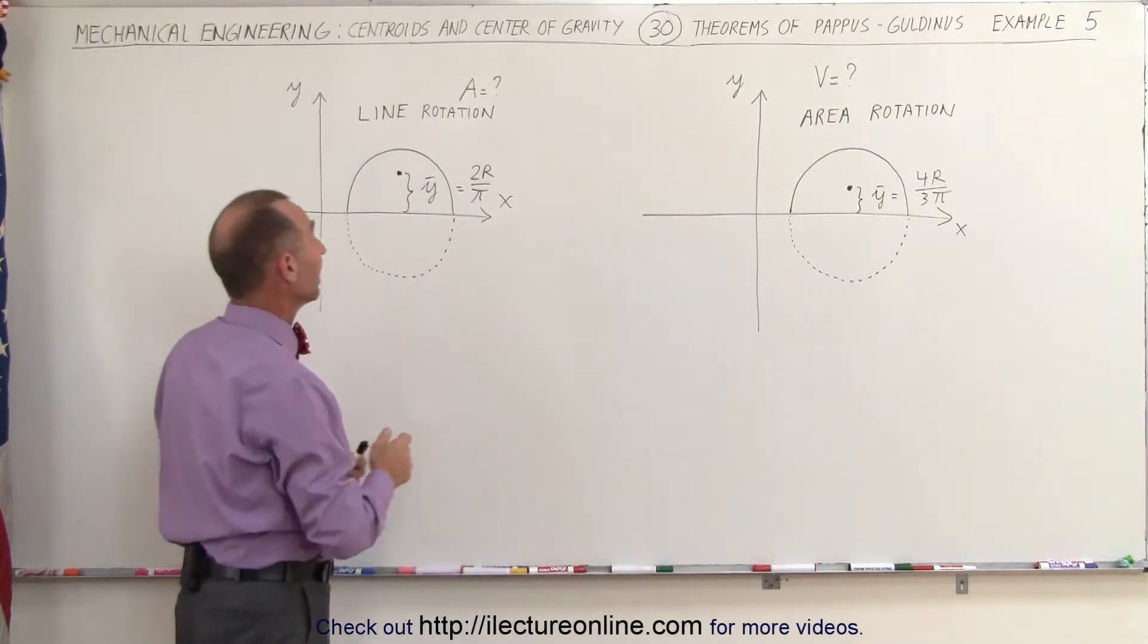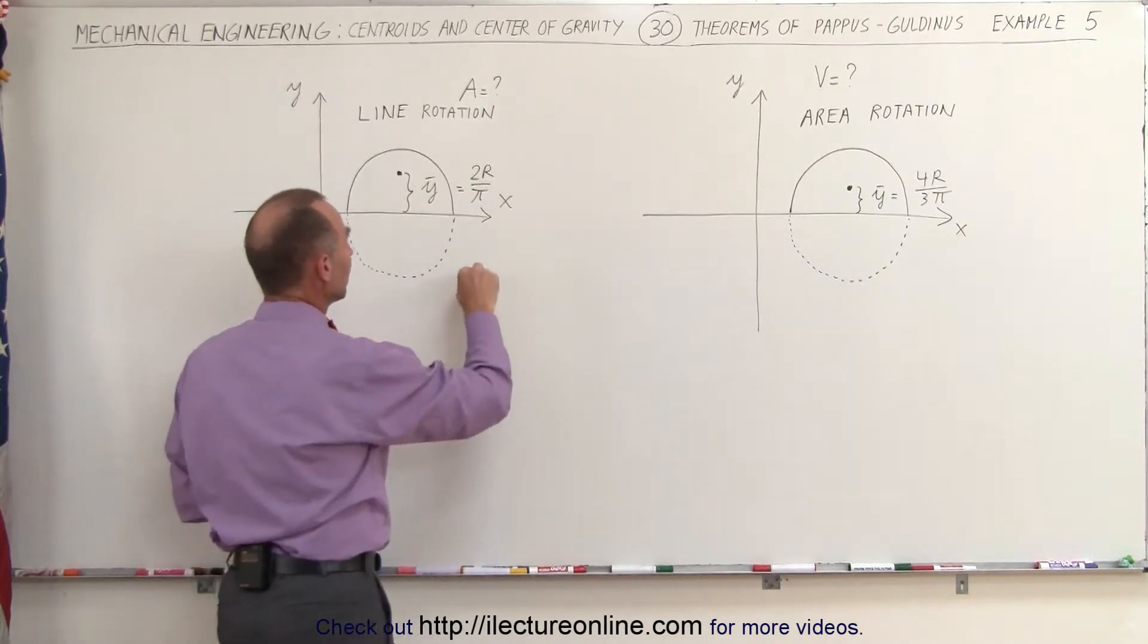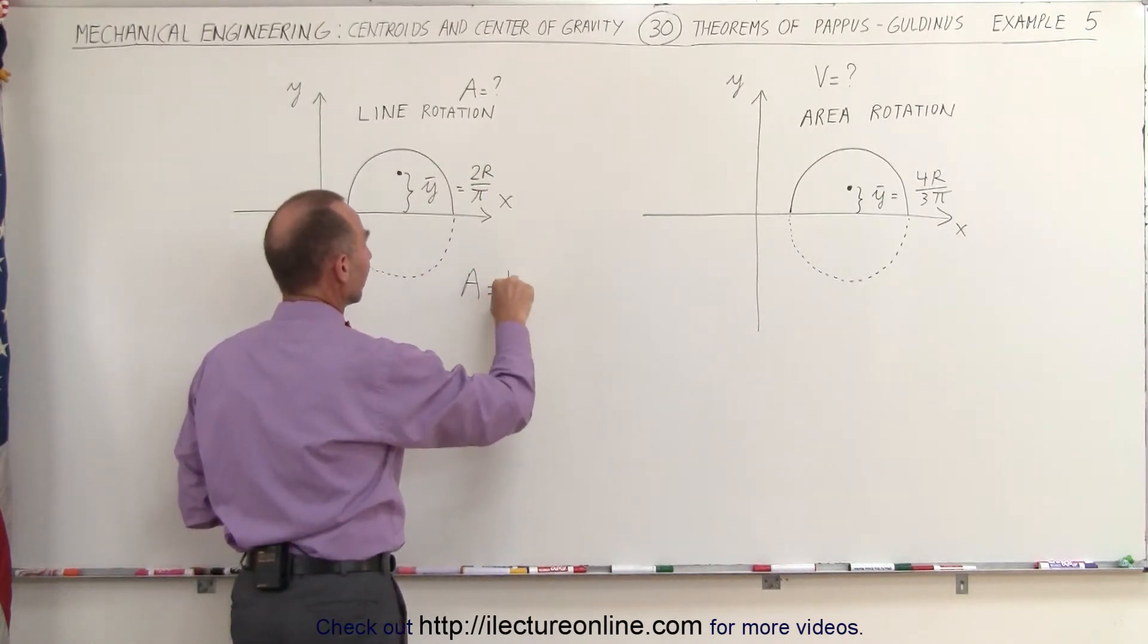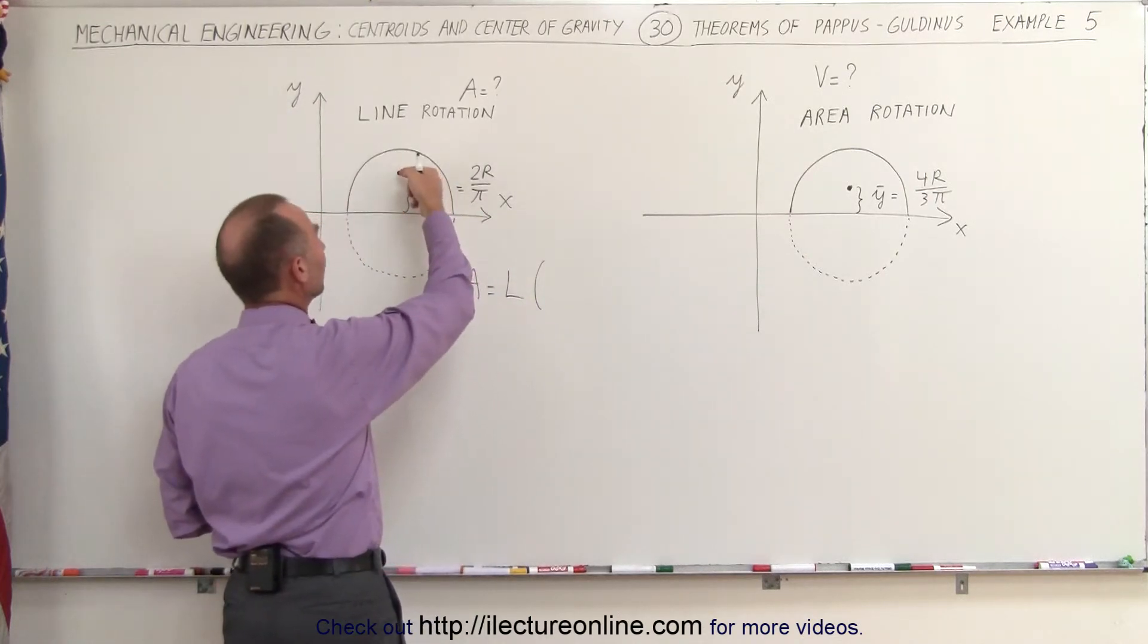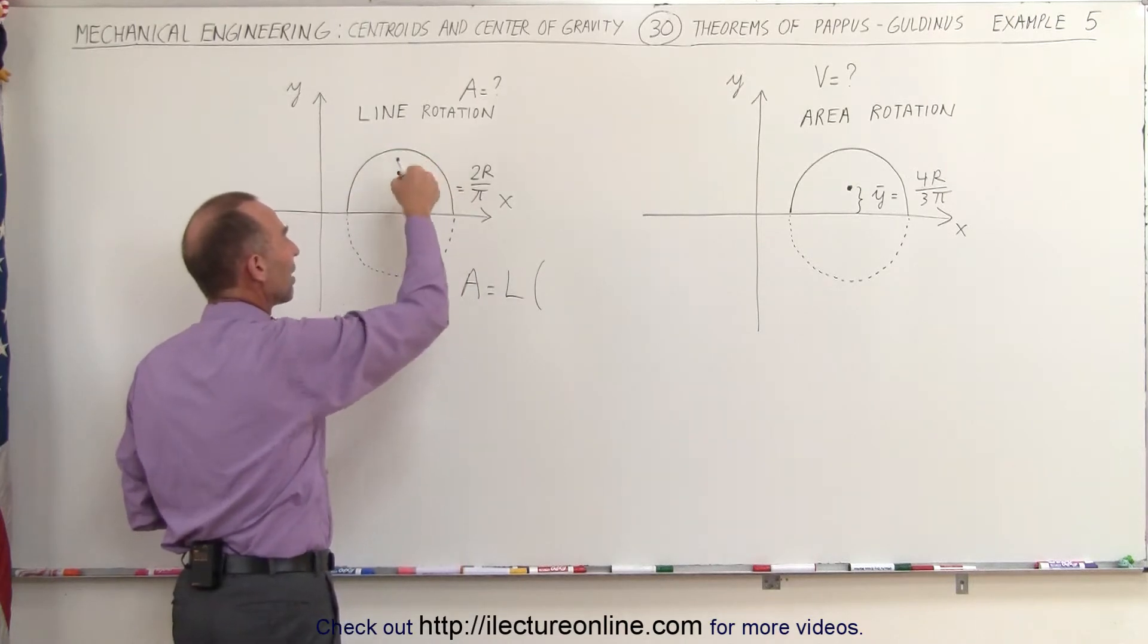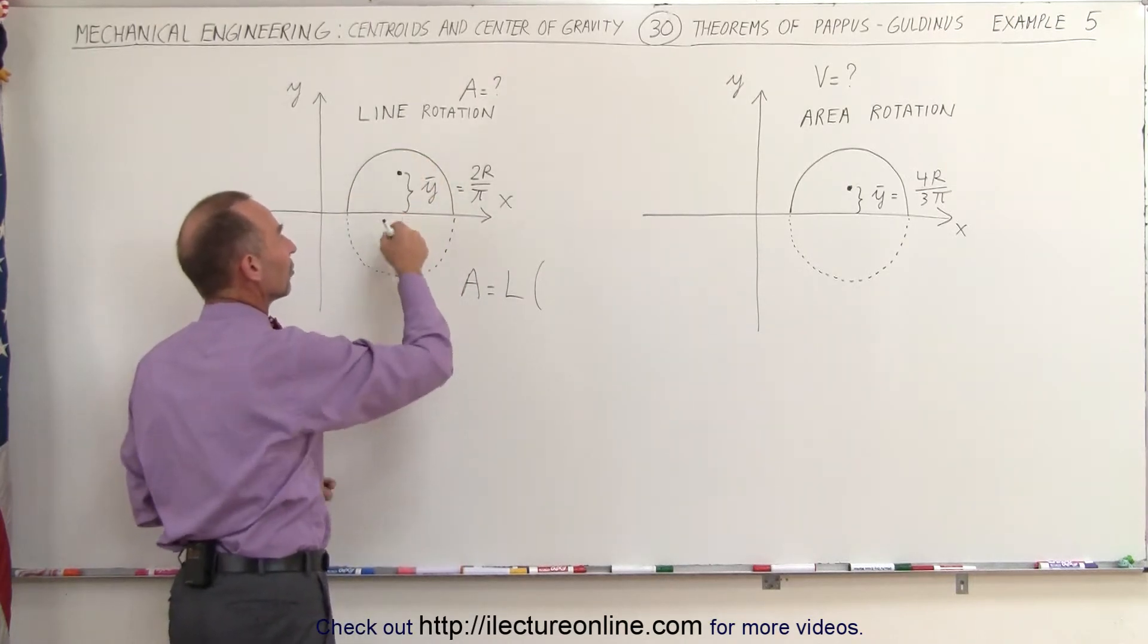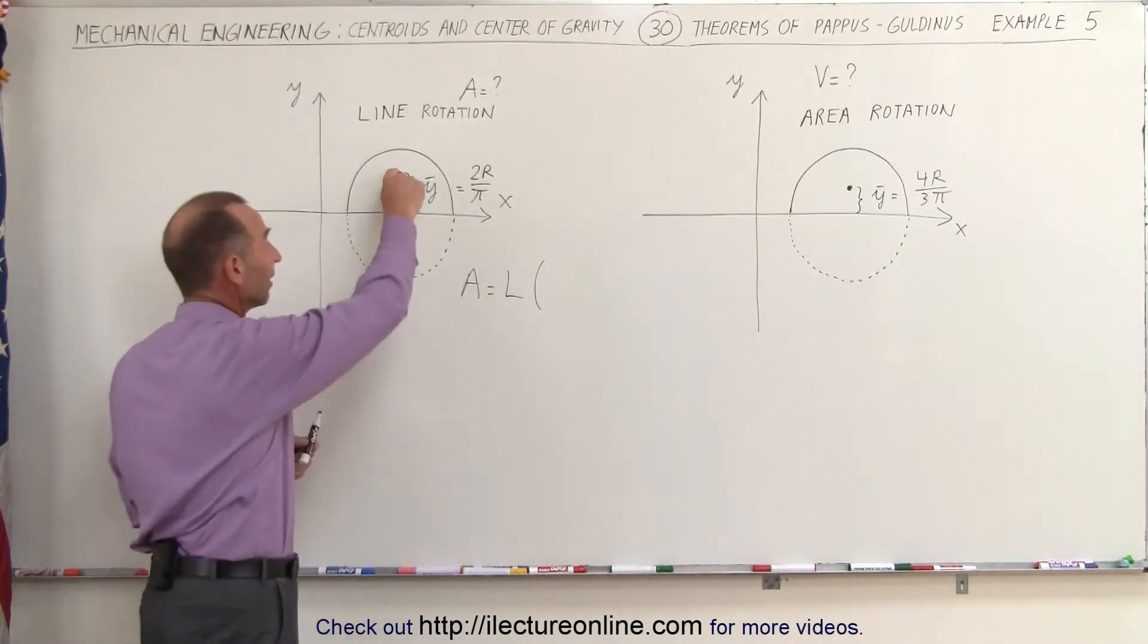The big difference is that, in the theorem of Pappus-Guldinus, to find the area, we need to multiply the length times the distance that the center of mass of the line segment travels as it rotates about the axis. And of course, it rotates around the axis, the path is a circle.